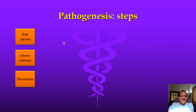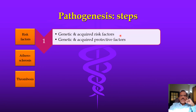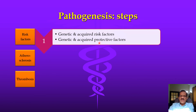Pathogenesis: risk factors lead to atherosclerosis, and atherosclerosis ultimately leads to clot formation. There are both genetic and acquired risk factors — some risk factors are genetic, others are acquired. There are also genetic and acquired protective factors we do not fully understand yet. We know that two people with the same level of risk factors — one may develop a heart attack and the other may not — perhaps because of some protective factors we do not yet understand.